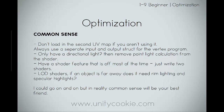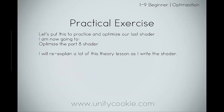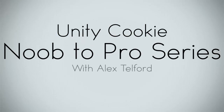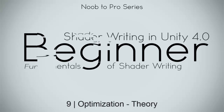Finally, common sense. Don't load in a second UV map if you aren't using it. Always use separate input and output structs for the vertex program. If you only have one directional light, you can remove point light calculations from the shader and remove the second pass. If you have a shader that is off most of the time, just write two shaders. LOD shaders: if an object is far away, it doesn't need rim lighting and specular highlights - you can swap shaders in and out just like you would objects. Common sense really is your best friend. For the practical exercise, I'm going to optimize our Part 8 shader, re-explaining concepts as we go.